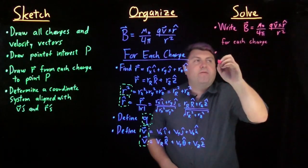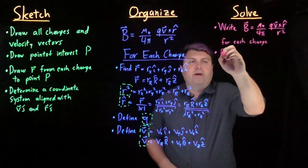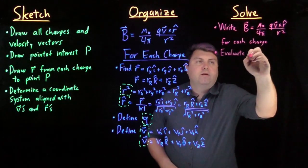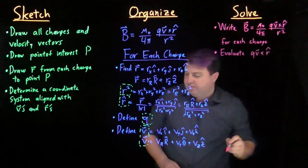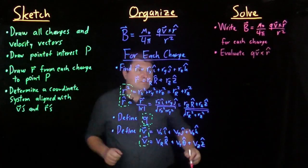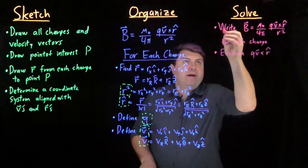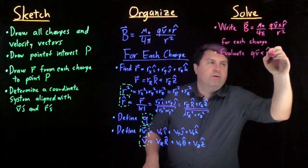And now that we have all the information, we want to evaluate this cross product of q v vector cross r hat. And once we have that, then we have each of these for each charge.